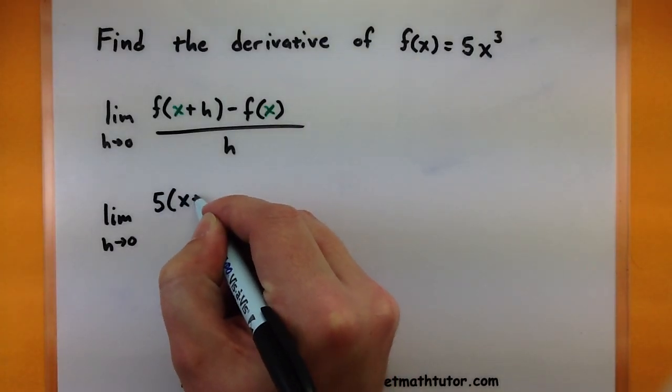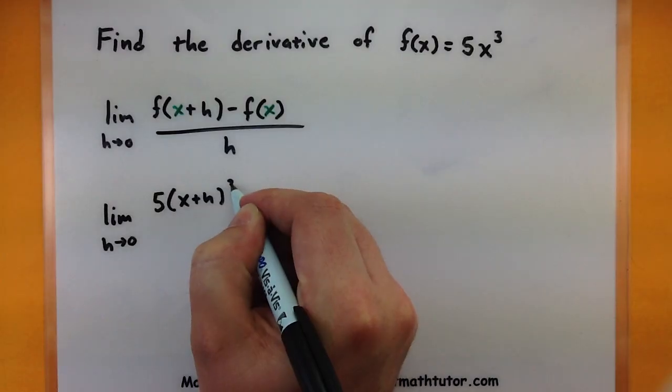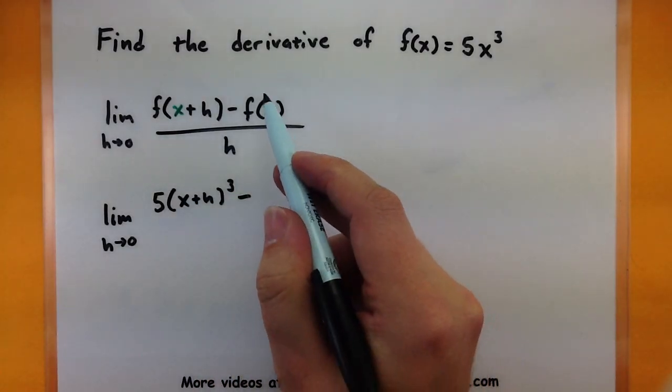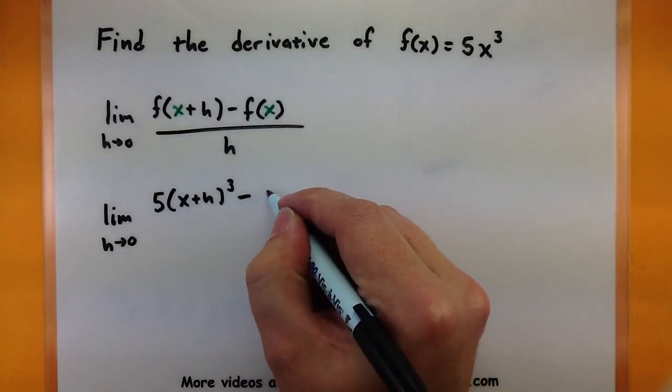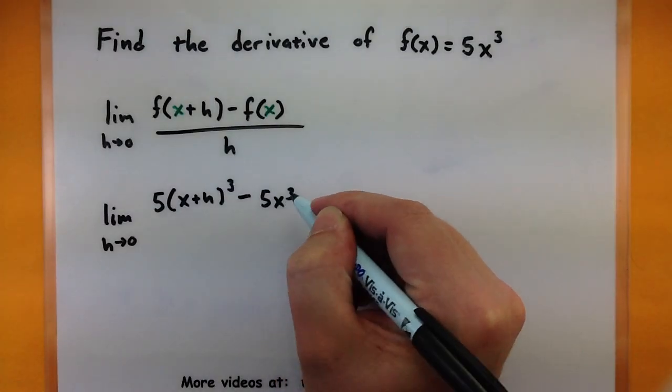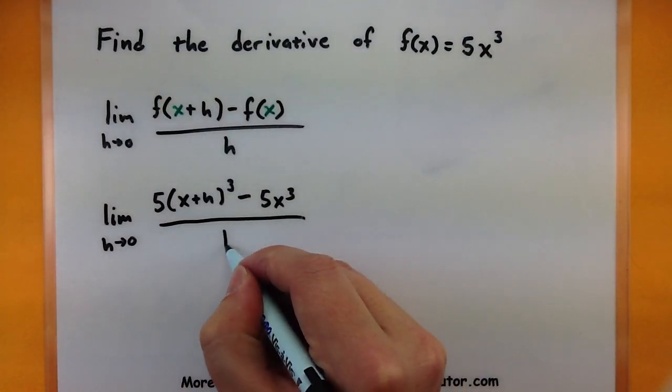So 5 times x plus h, whole thing cubed, minus, and I have the function just as it is, so 5x cubed all over h.